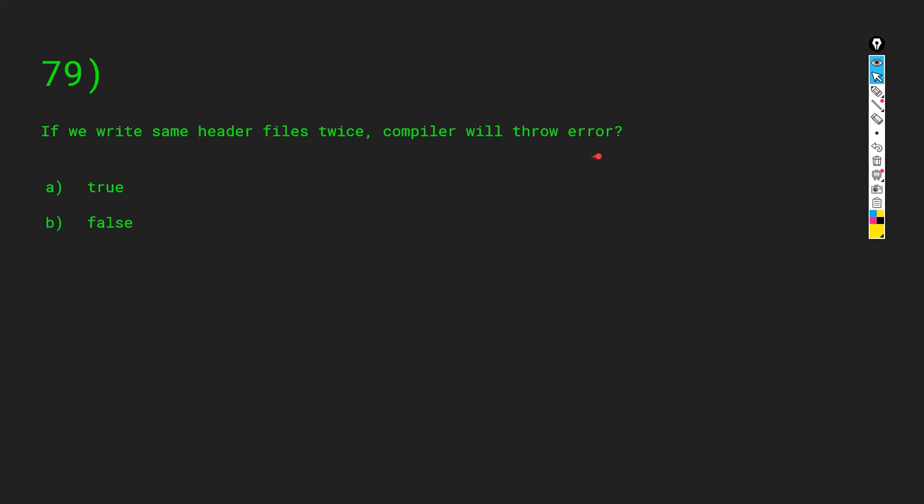If we write the same header files twice, will the compiler throw an error? Since C is a sequential language it compiles one line after the other. If I write hash include stdio.h once and then again, the compiler will fetch the functions from it again — it won't throw an error. So the answer is False.